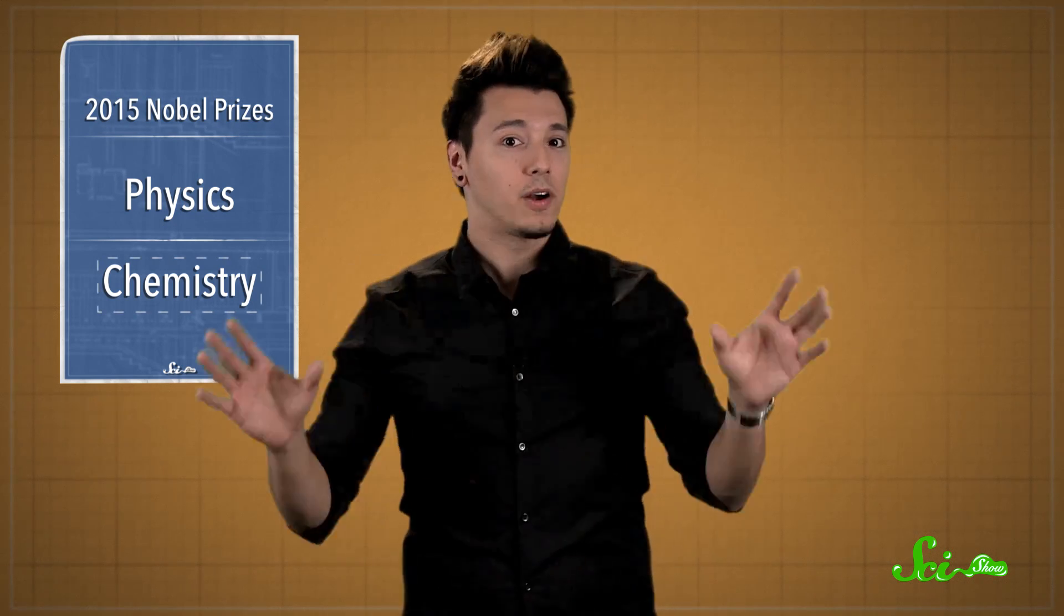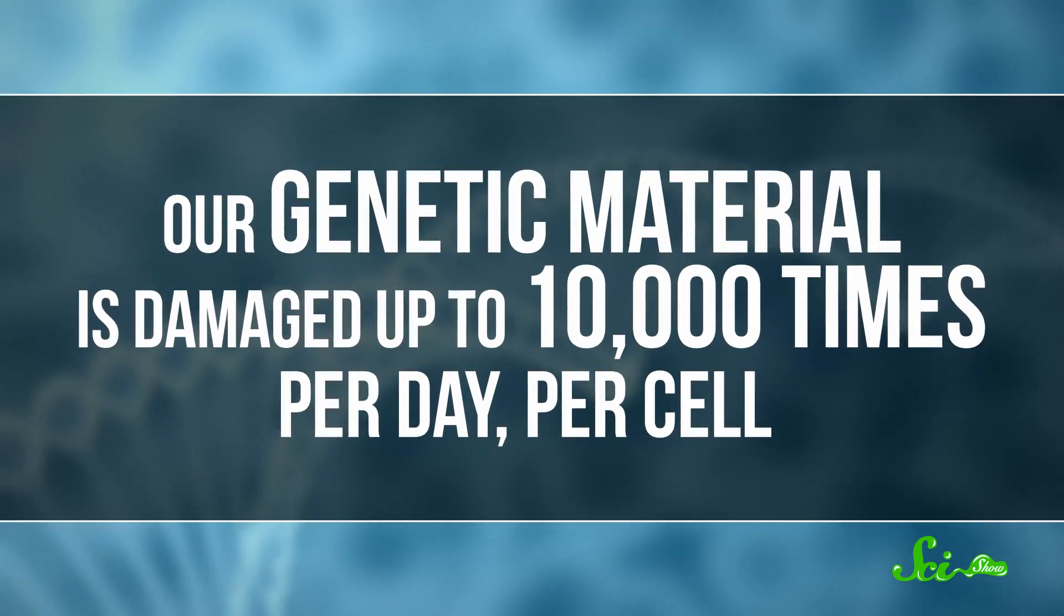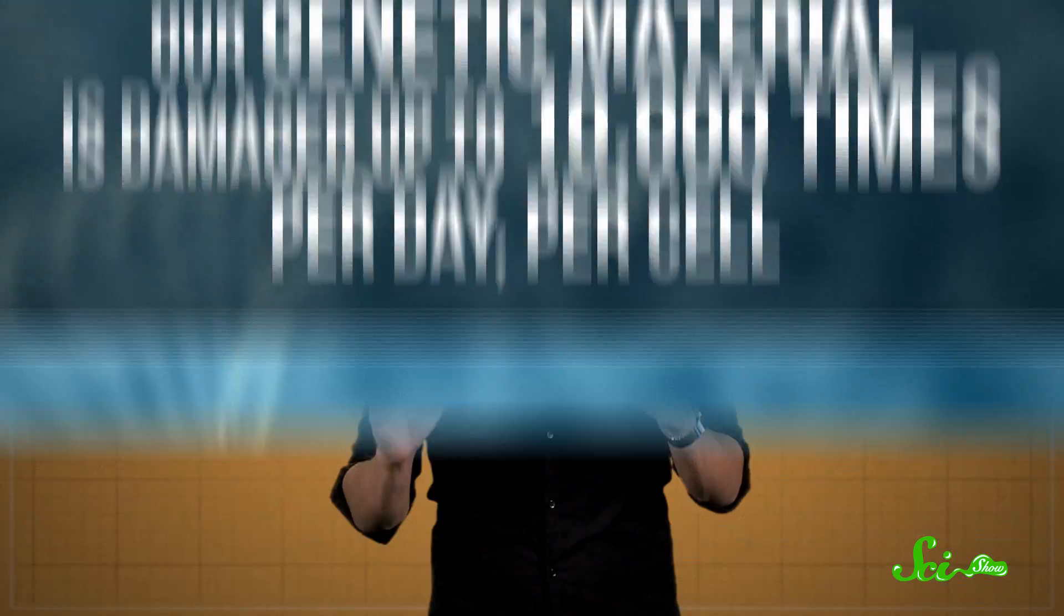The Nobel Prize for Chemistry was awarded to three scientists, again all part of separate teams, who helped figure out how the cells in your body repair damaged DNA. DNA is fragile. Our genetic material is constantly damaged, up to 10,000 times per day, per cell. There is no way that life based on such a fragile molecule could exist if your cells couldn't repair that damage. And it turns out that different types of DNA damage are repaired by different mechanisms in your cells.